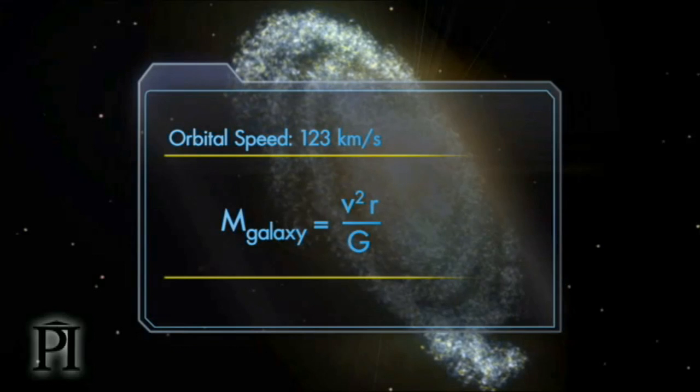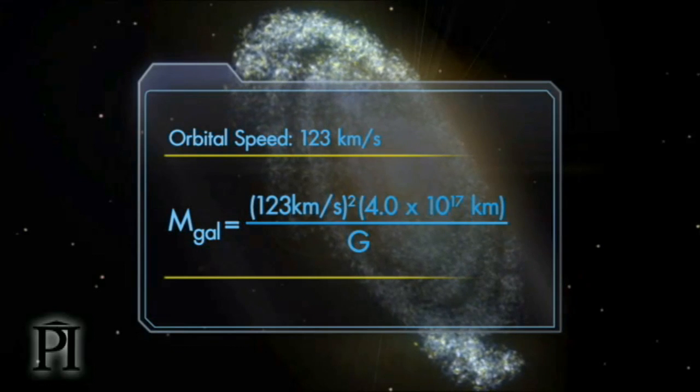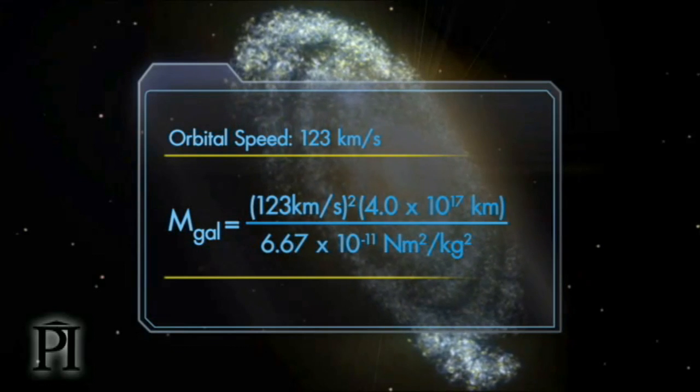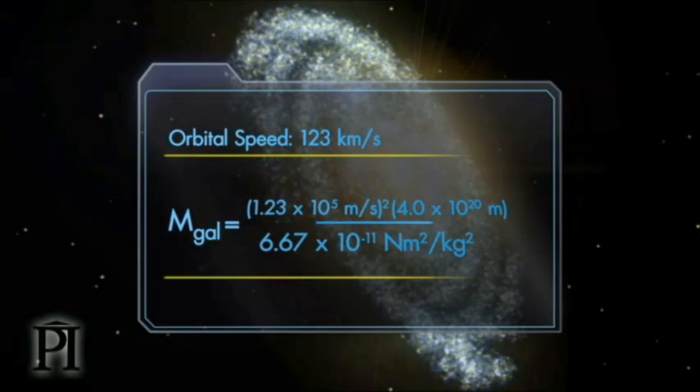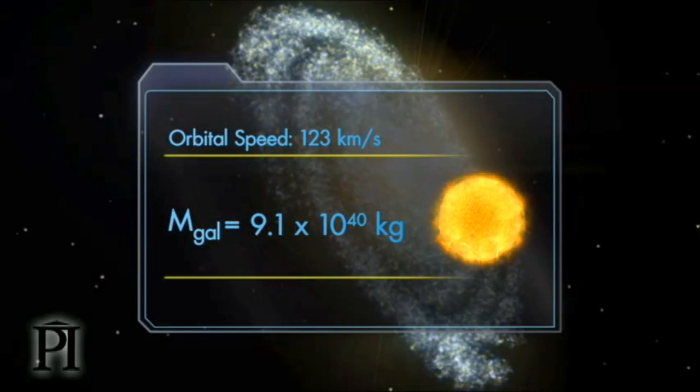Let's substitute those values for speed and radius into the galaxy mass formula. This huge number is equal to the mass of 46 billion suns. 46 billion suns! That's pretty bright!